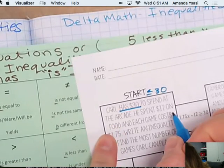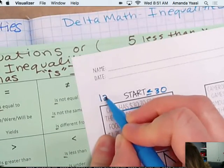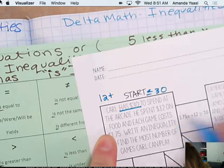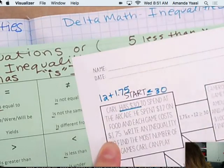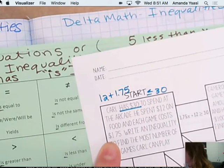So it has to be less than or equal to $30. He spent $12 on food, so $12 plus the $1.75 per game. $1.75 per game is less than or equal to $30.